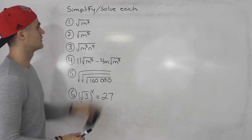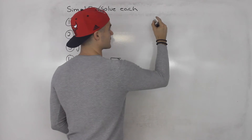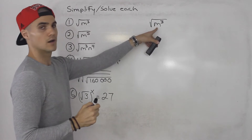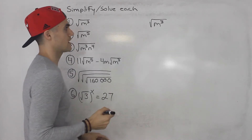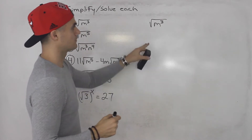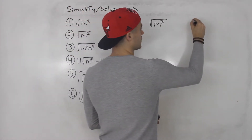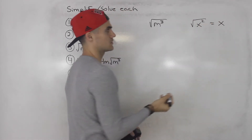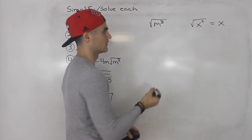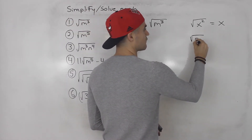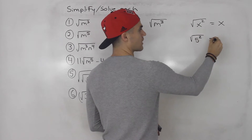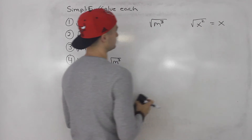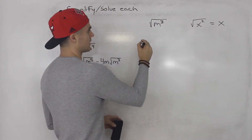Starting with number one: the square root of m cubed. Instead of having a number inside the radical, we have a variable. What you want to remember in general is that the square root of any variable squared is just equal to that variable. You can see that with the square root of 5 squared — 5 squared is 25, and the square root of 25 is just 5.